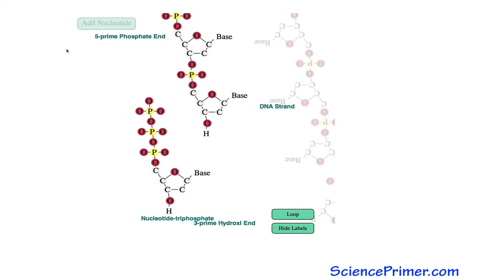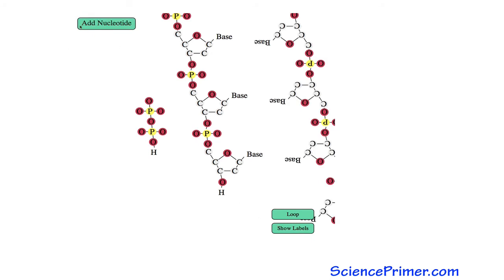During strand elongation, two phosphates are cleaved from the incoming nucleotide triphosphate. This results in the formation of a pyrophosphate molecule and the extension of the DNA polymer by one nucleotide.